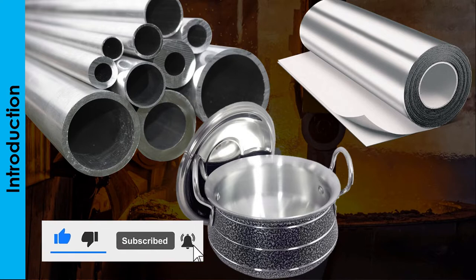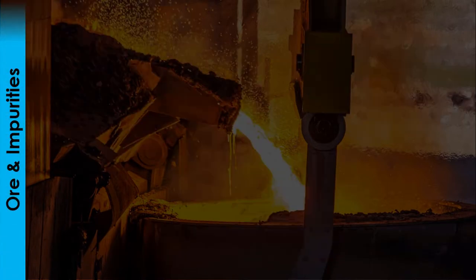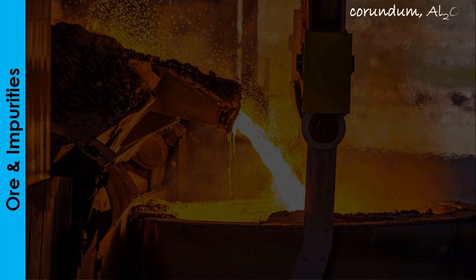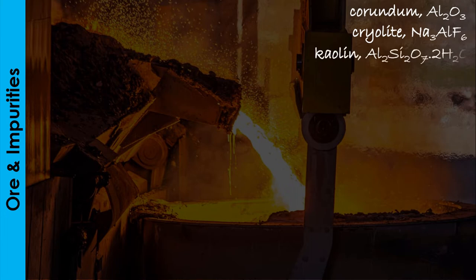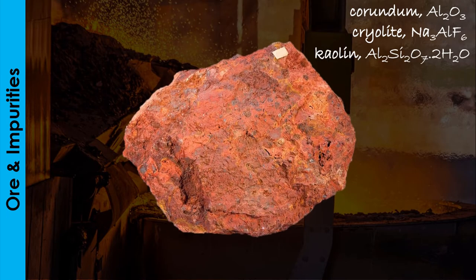To put aluminium into any form of usage, it must first be extracted or isolated from its ores. Though aluminium has other ores from which it can be extracted, the most commonly used is bauxite. Bauxite is preferred to other ores due to its low silica content.